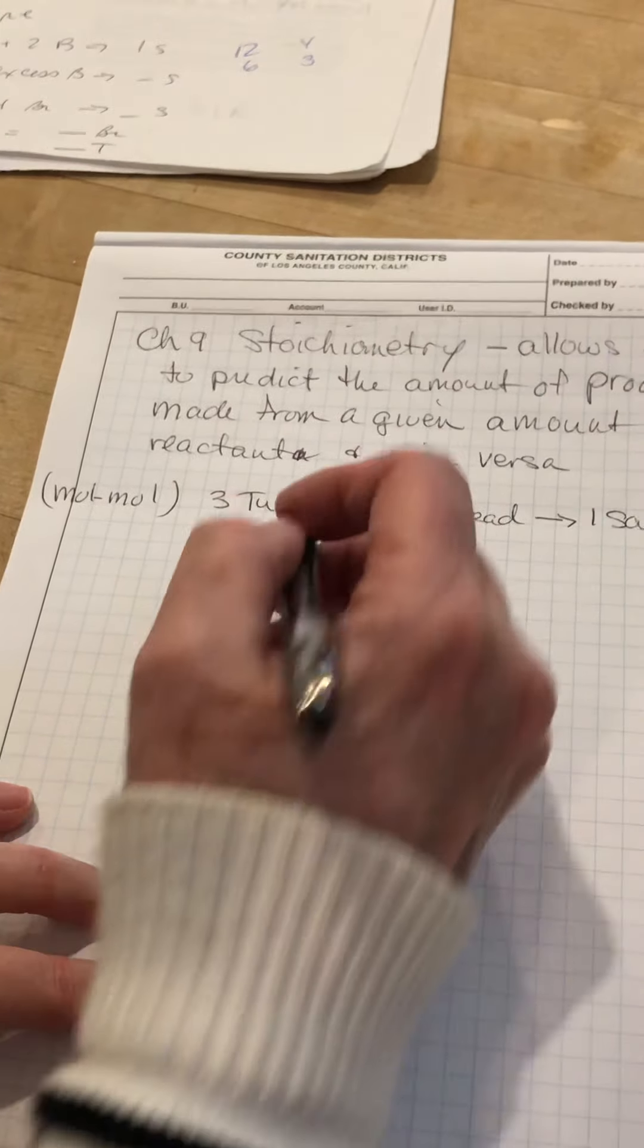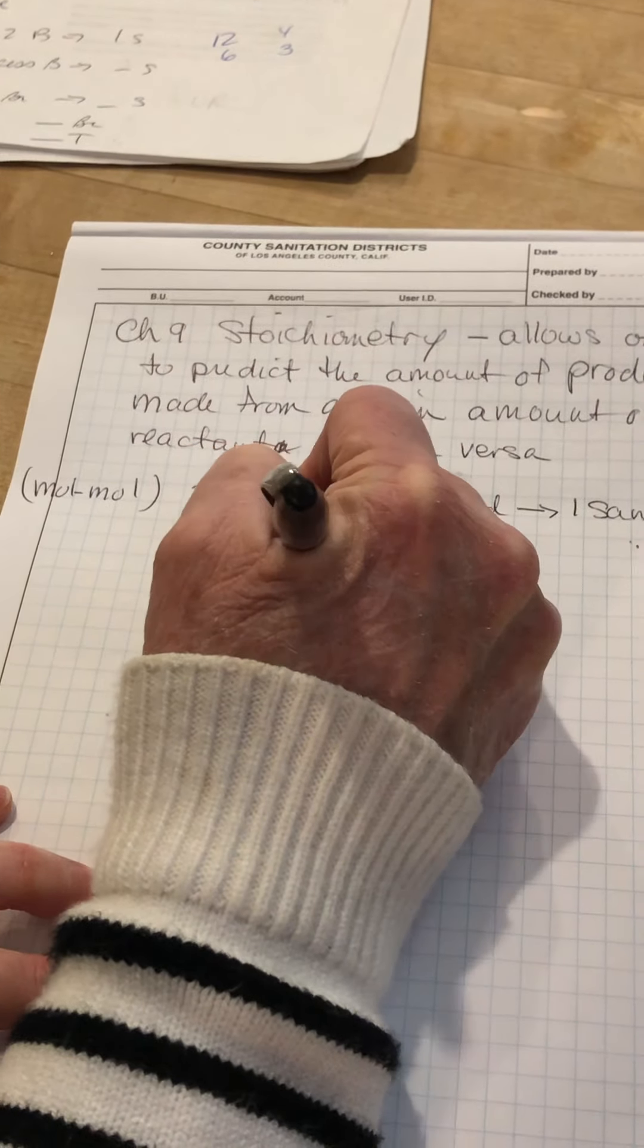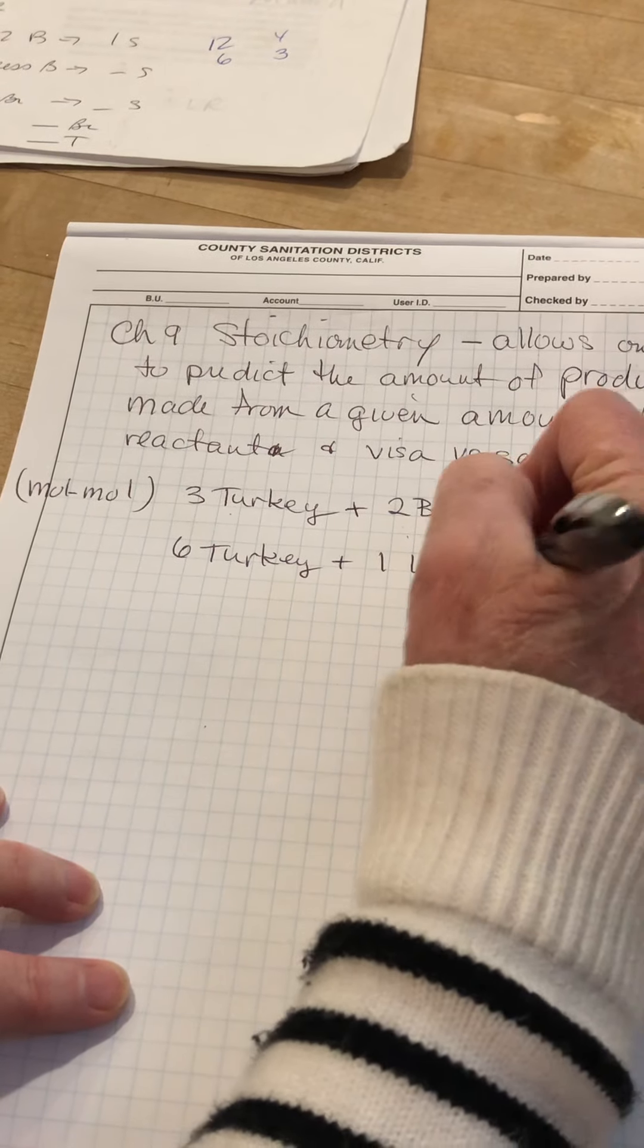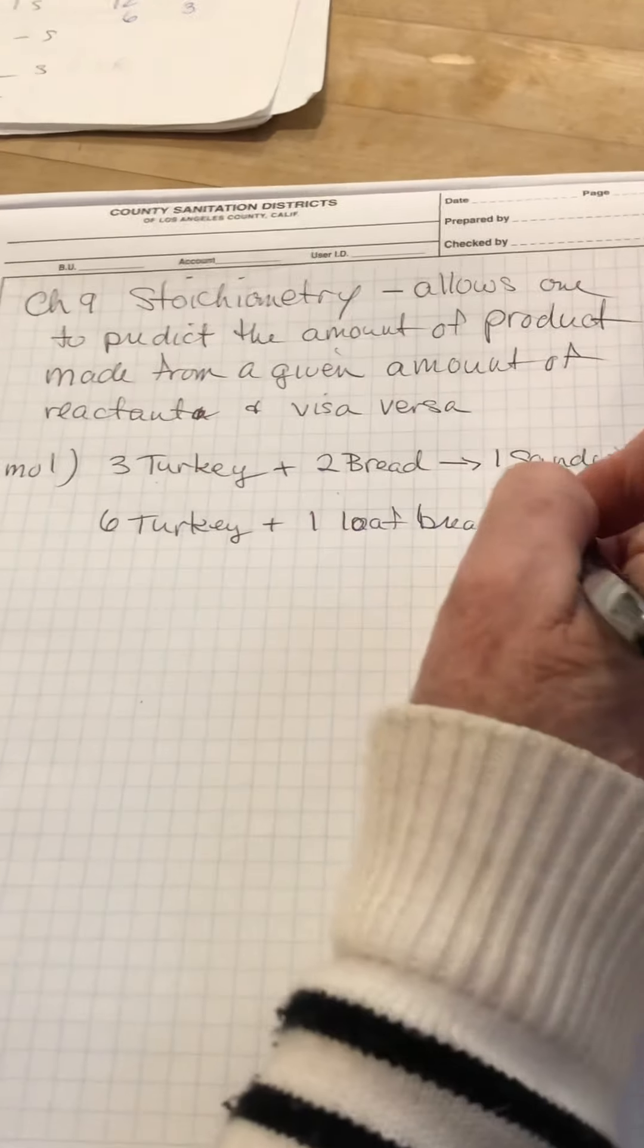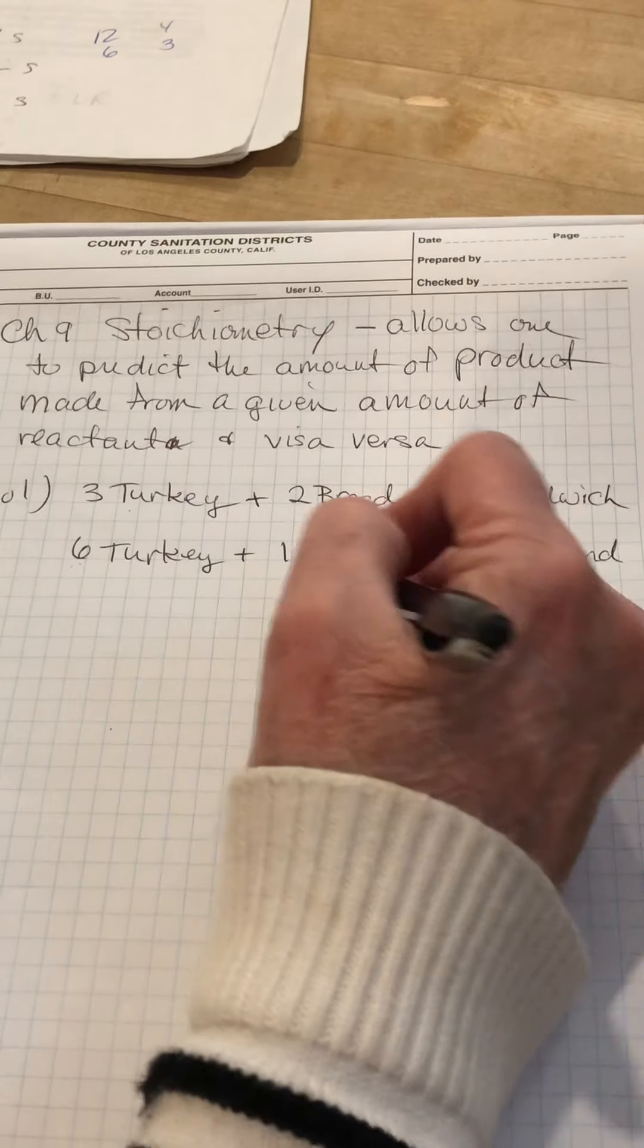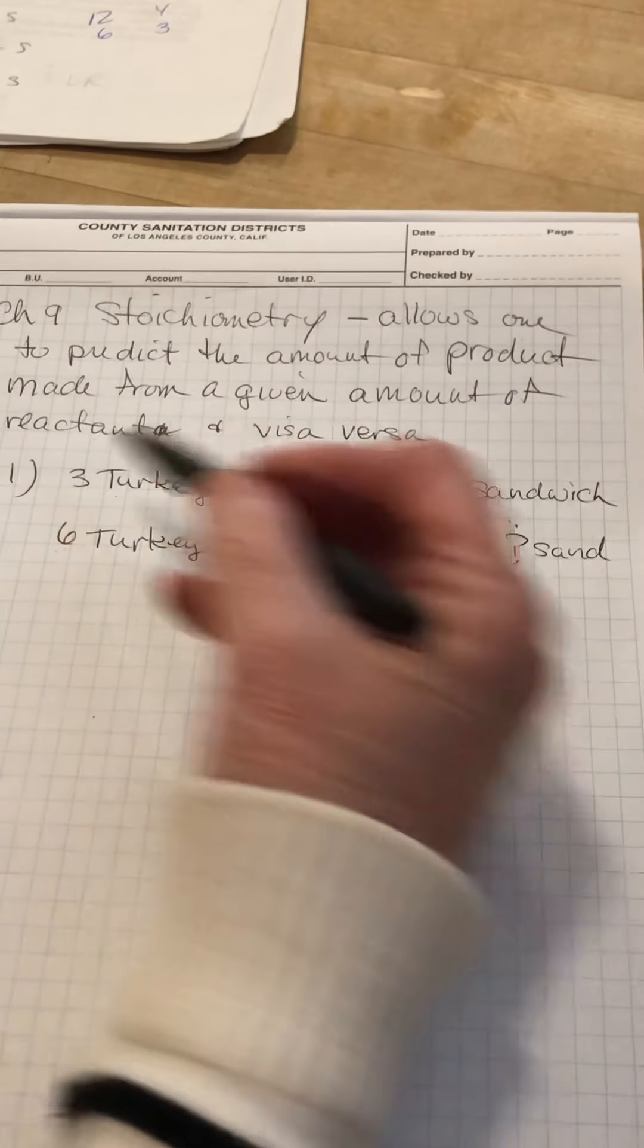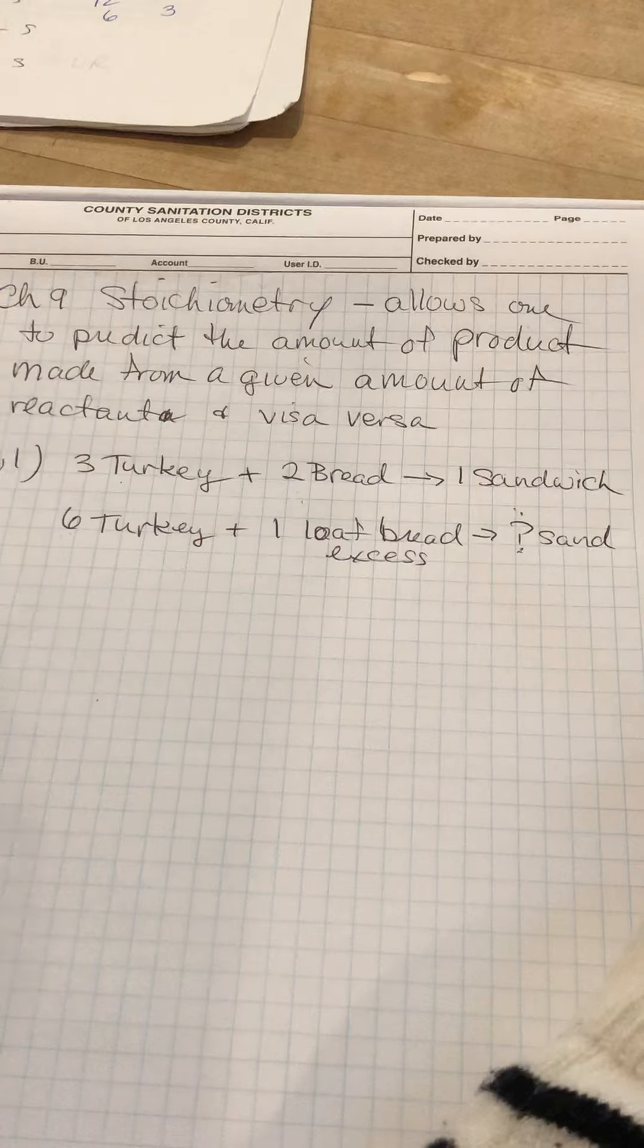So, suppose I have six slices of turkey and an entire loaf of bread. And I want to know how many sandwiches I can make. Sandwiches are now just going to be written S-A-N-D. Okay, what's happening here is this loaf of bread, this whole loaf of bread, is in excess. When something's in excess, we get to ignore it. So, if we look at this, you see three pieces of turkey will make one sandwich. So, obviously, six slices of turkey will make two sandwiches.